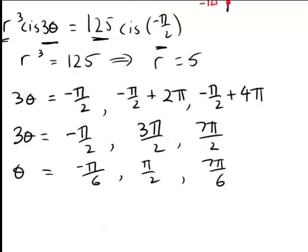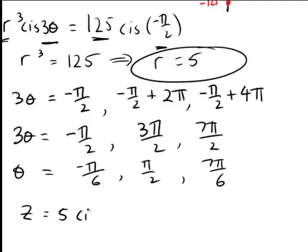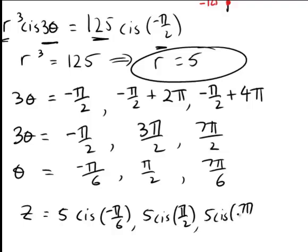Hence, since our cube roots have the form r cis θ, in this case our cube roots will be z = 5 cis(-π/6), 5 cis(π/2), and 5 cis(7π/6).